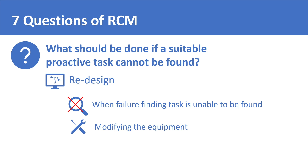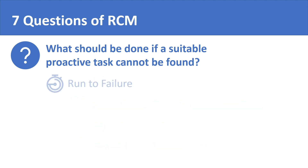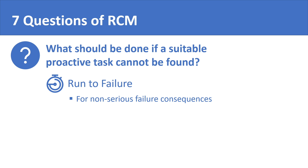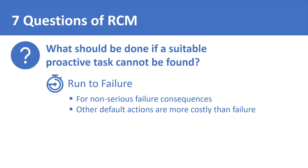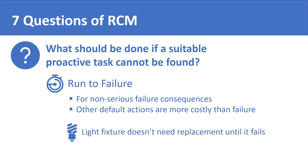Redesign is opted in the light of financial feasibility of failure versus the cost of redesign. The third type of default action is called run to failure or simply RTF. It is simply letting the equipment fail. However, this option is viable only if the consequences of failure are non-serious and the cost of other default actions is more than the cost of failure. For example, the light fixture inside an electrical cabinet doesn't need replacement until it fails.